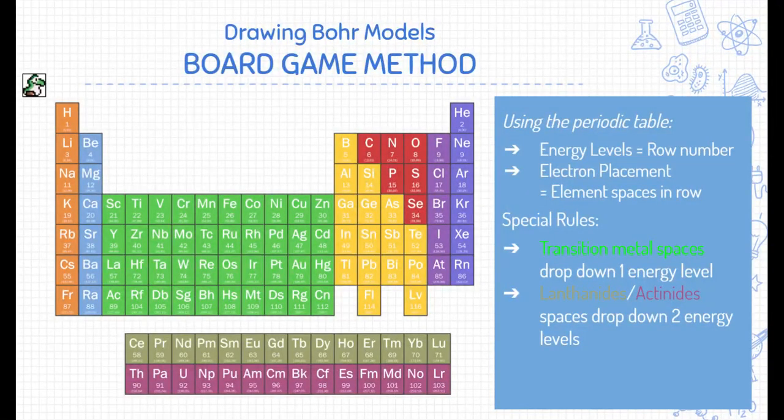All right, so drawing Bohr models. Now that we remember that information, let's talk about how we use the periodic table to draw Bohr models. I'm calling this the board game method. If we use the periodic table, the energy levels, or how many rings the Bohr model has, is the row number that element exists on. The electron placement is just following along with the element spaces in a row.